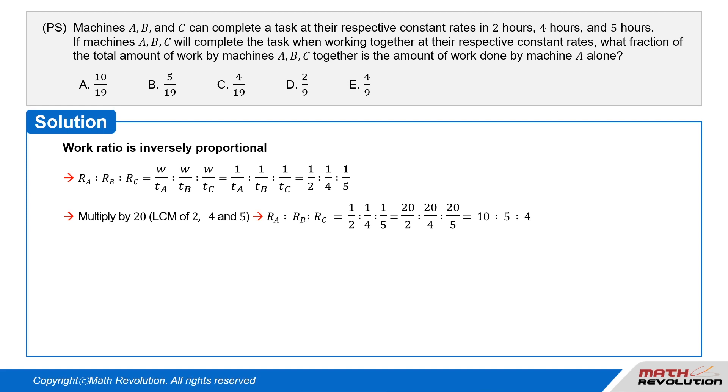Multiply the ratios by the least common multiple of 2, 4, and 5, or 20. So, R_A : R_B : R_C equals 1/2 : 1/4 : 1/5, which equals 20/2 : 20/4 : 20/5, which equals 10 : 5 : 4.